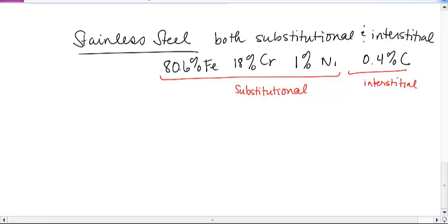So we have substitutional, interstitial, and the last one I'm going to mention, although I'm not going to mention much about it, is those other ones were homogeneous alloys. There is such a thing as a heterogeneous alloy.